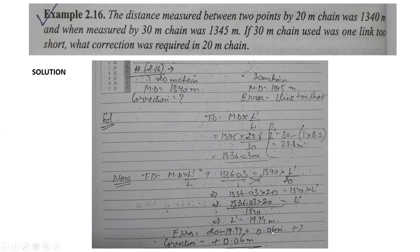But we have to find the correction. Since the error is negative, the correction will be positive. So the correction is equal to positive 0.06 meters. That is the correction required in the 20-meter chain.